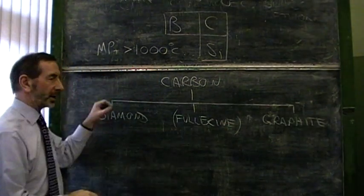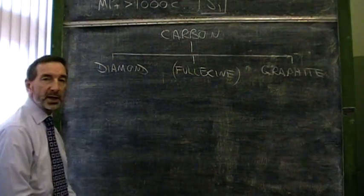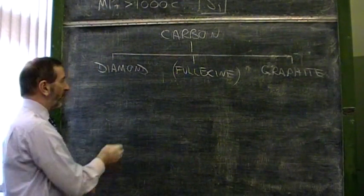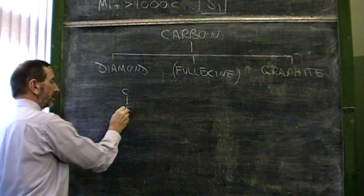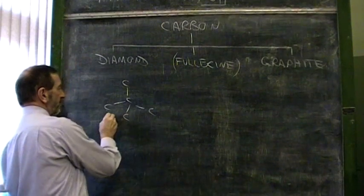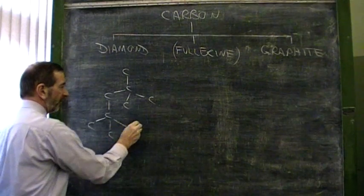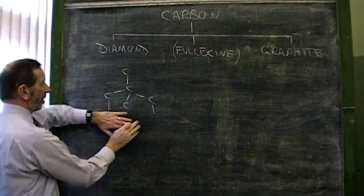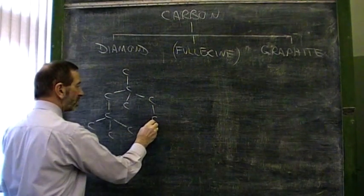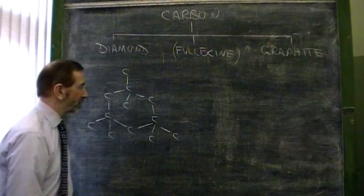We'll come back to fullerene later. Let's take diamond first of all. Now, diamond has an extremely high melting point because it has a giant covalent network. The carbon atoms in diamond, and diamond is just carbon atoms, but arranged in a very special way, arranged in a tetrahedral structure. If you're asked to draw a diamond, you could draw that tetrahedron, join to that tetrahedron, join to this tetrahedron. And there's a little piece of diamond showing carbon atoms joined together.